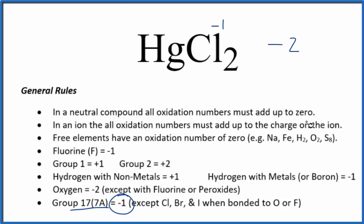For this to all add up to zero, mercury has to be a positive 2. So the positive 2 and the minus 2, they add up to zero.